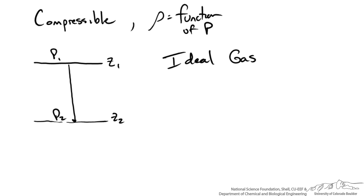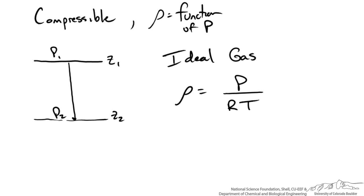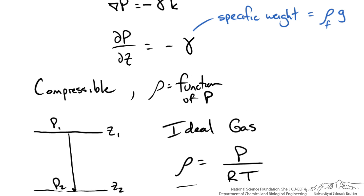So our ideal gas law says that the density is going to be equal to our pressure over the gas constant and the absolute temperature. So now we can plug this relationship for density into our equation for our pressure gradient. Because the specific weight is the density times gravity.